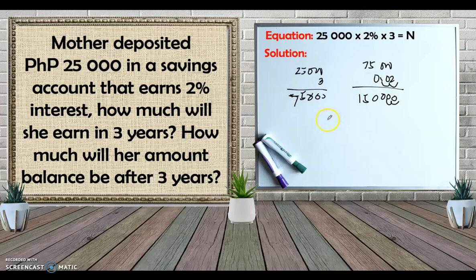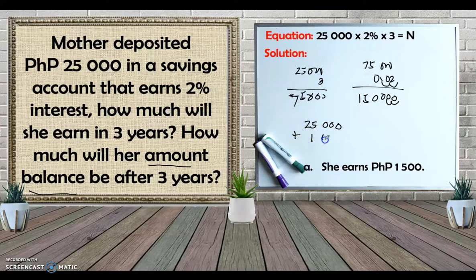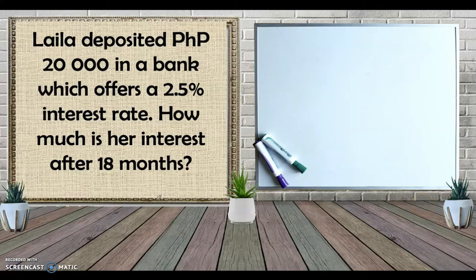The next question asks for the amount balance. The amount balance is the sum of the principal plus the interest. So we add the principal of 25,000 plus the interest of 1,500. Therefore, the amount balance after three years is 26,500 pesos.